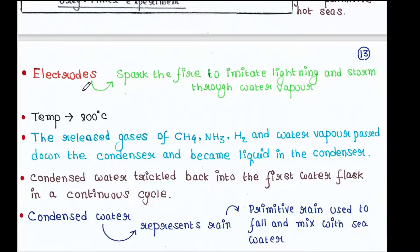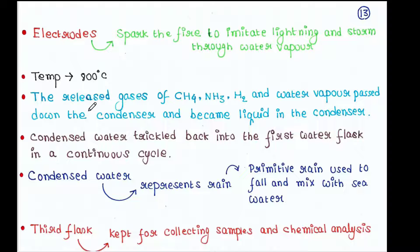And the electrodes were used to spark the fire to emit lightning and storm through water vapor. And the total temperature was maintained 800 degrees Celsius in the system.